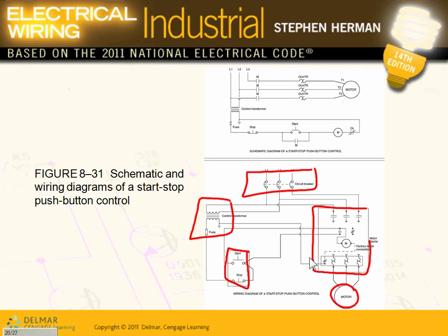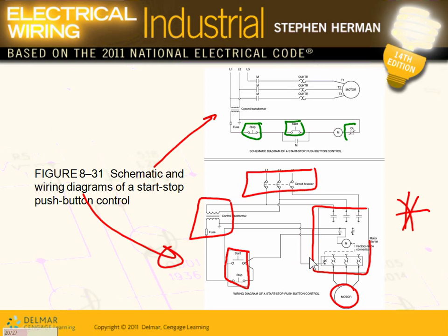The schematic diagram cares less about where the boxes are located — it just shows the control logic. In order to wire the system, you really need the wiring diagram. The schematic helps you understand the system. With the wiring diagram I can go wire right now; the schematic tells me to understand, but it may not tell me that multiple components shown separately are actually all in one box.